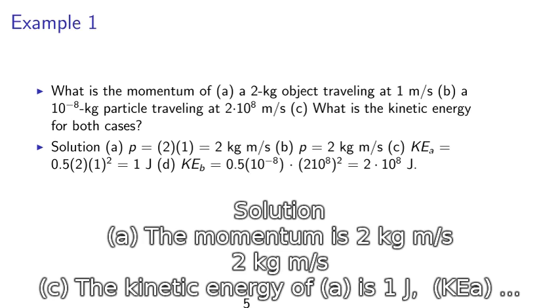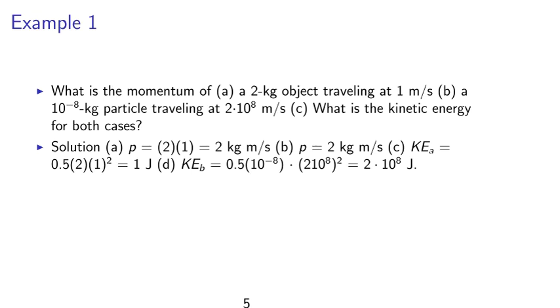Solution. For the two-kilogram object, the momentum is two-kilogram meters per second, which you get by two times one. (b) For the ten to the minus eighth kilogram particle, we get two-kilogram meters per second also.